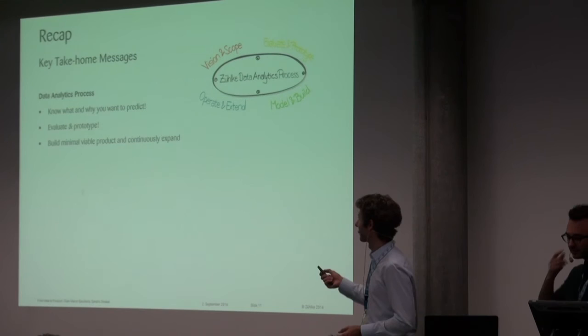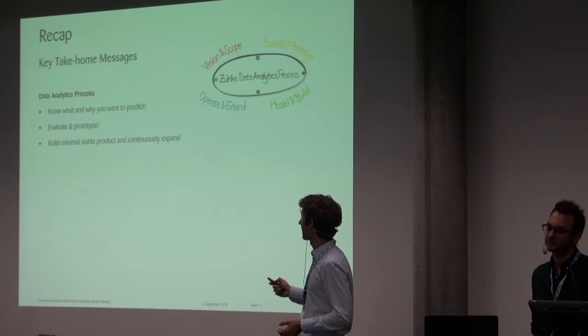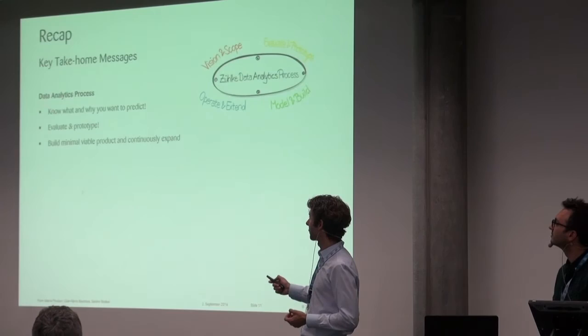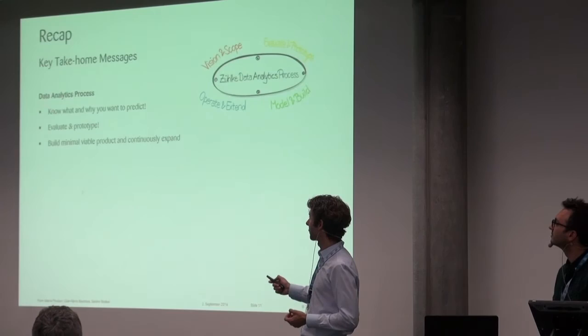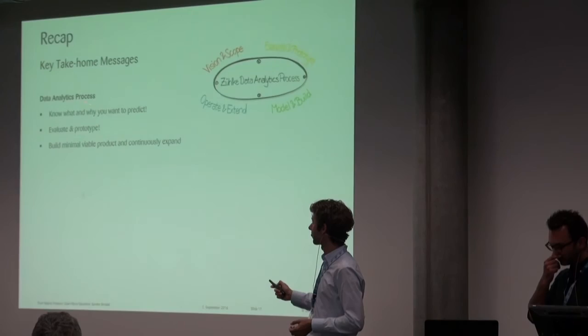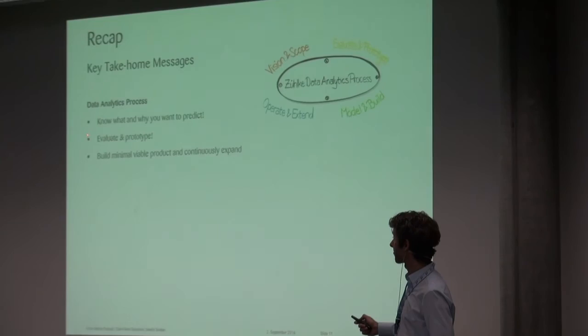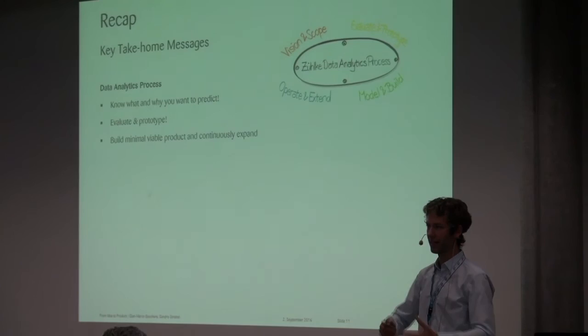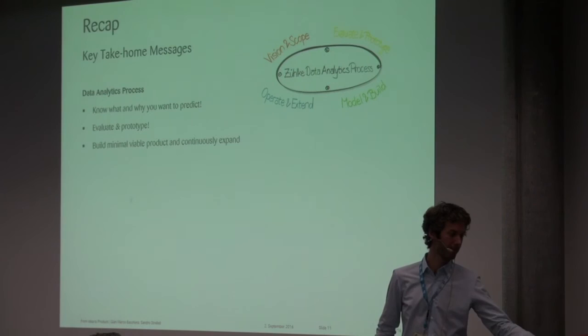Alright so let's recap what happened on the data analytics process side. There are three main takeaways. Know what you want to build and why you want to build. Make really clear why you're building it and what the business value is. Then as quickly as possible evaluate the prototype, figure out the feasibility. Not building a huge application, huge stack before you know that it's worth it. And then build a minimal viable product and continuously expand it while running.